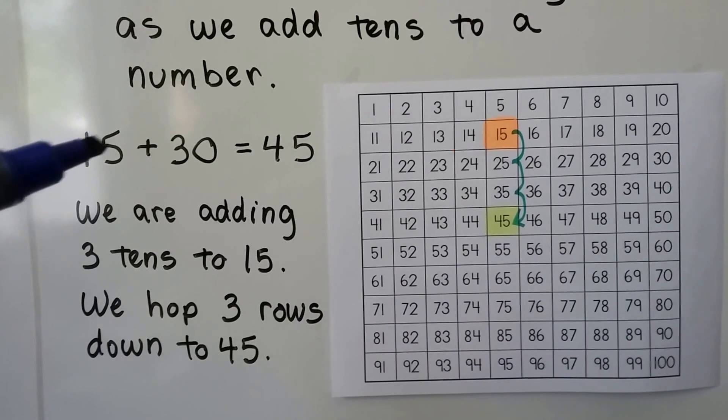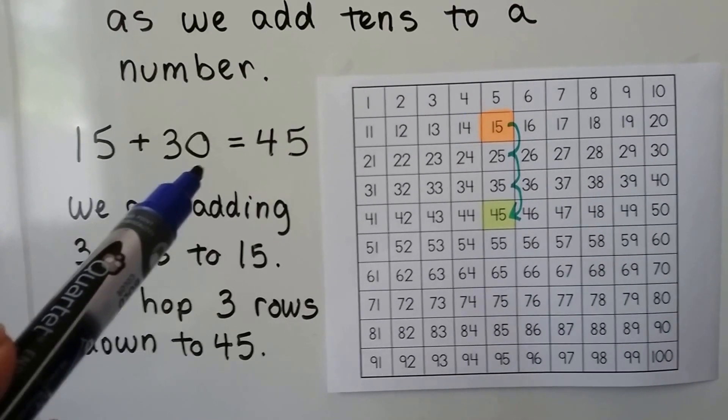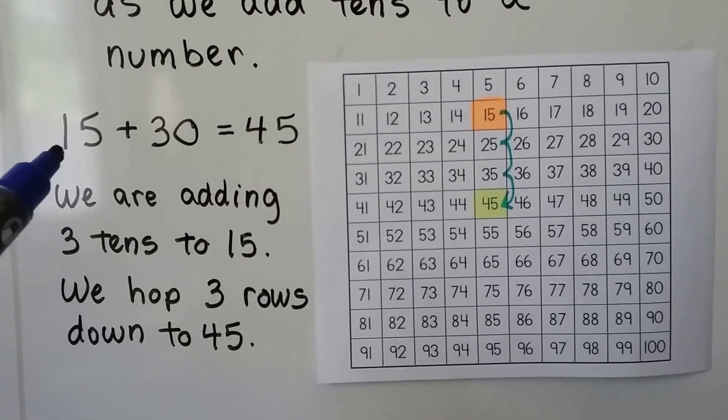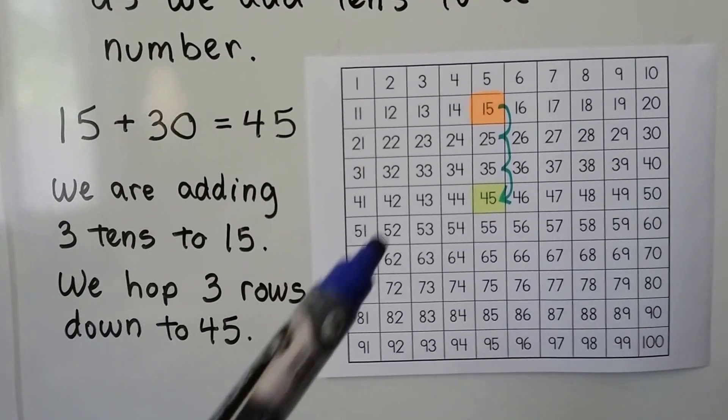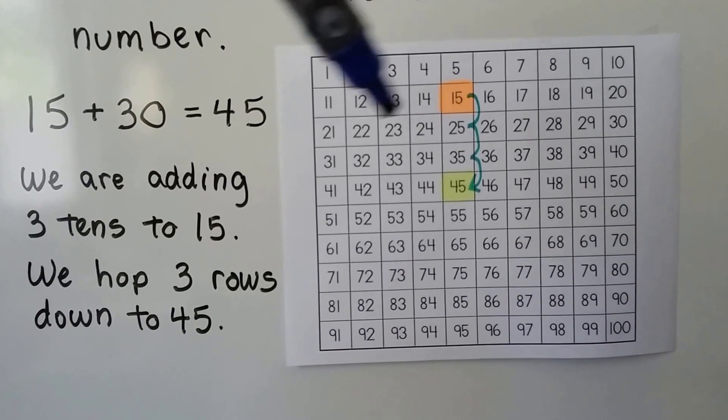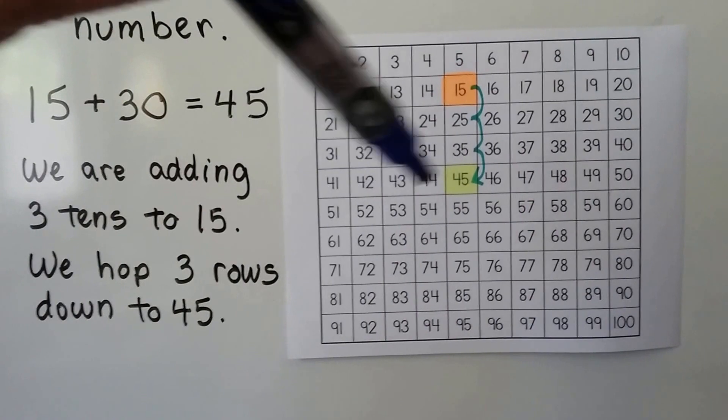We can use this to see what's happening as we add tens to a number. If we have 15 plus 30, we're adding three tens. There's three tens and no ones. We're adding three tens to the tens place of the 15. We go to the 15 and we hop down three times. Each row is 10, so every time we hop, we're adding another 10.